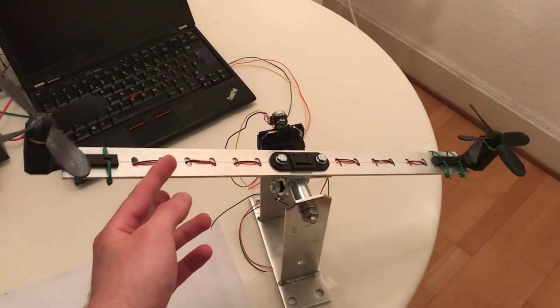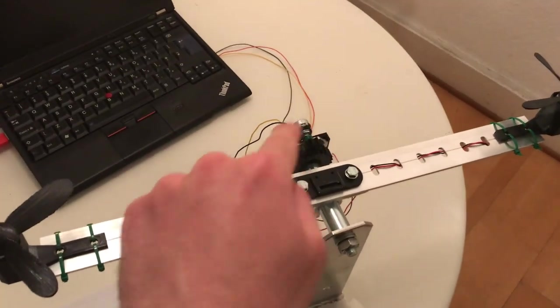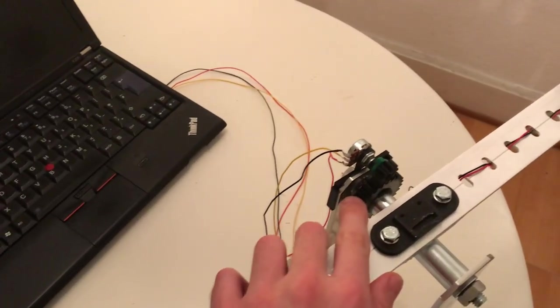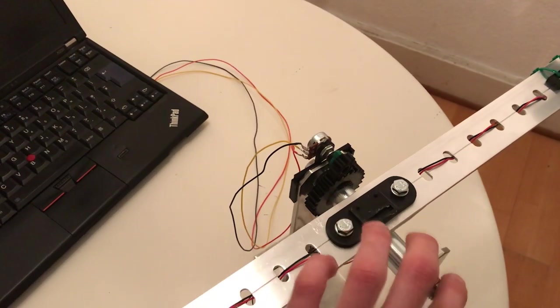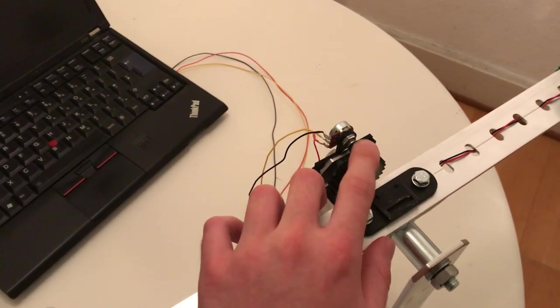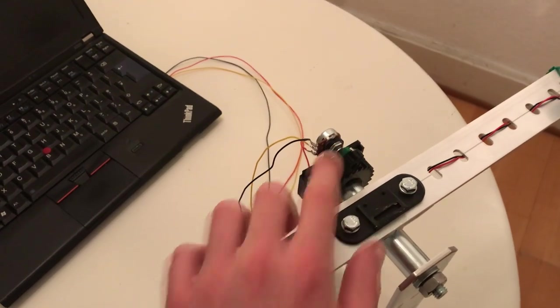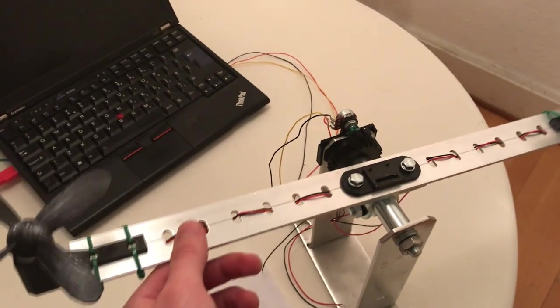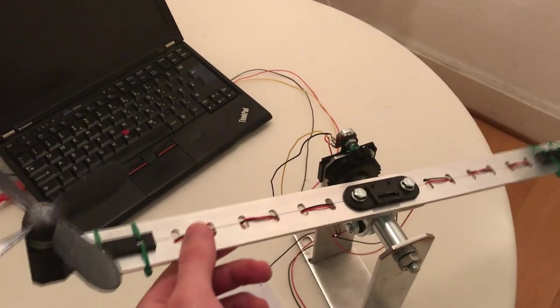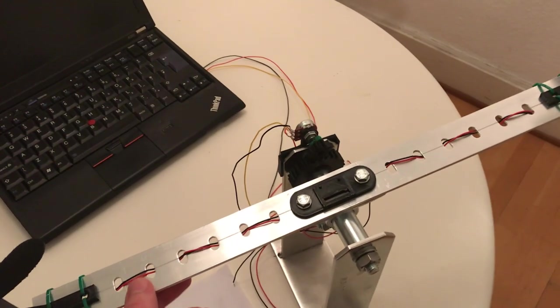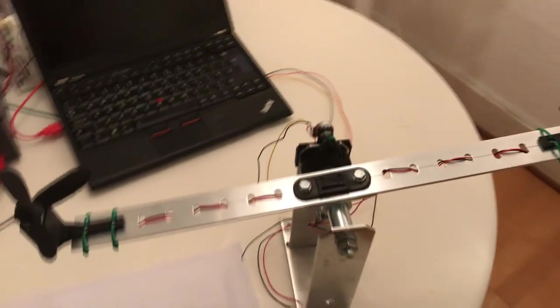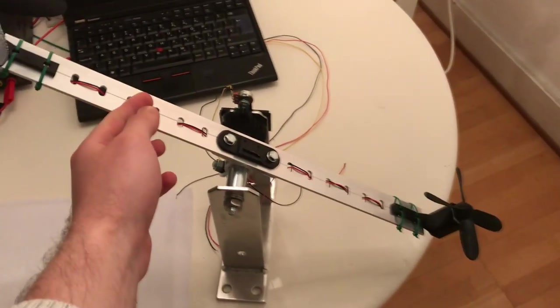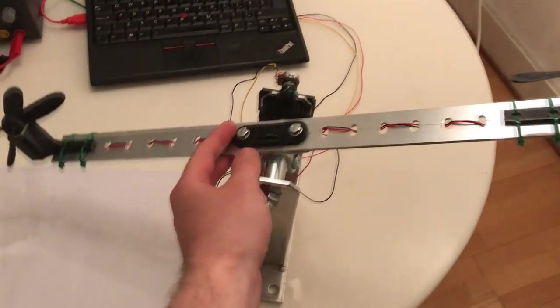The way we're sensing the angle is via this potentiometer in this little assembly over here. It's a bit hard to see in the light but these are actually two gears. One large gear attached to the pivot and then one smaller gear attached to the shaft of the potentiometer. So when the larger gear rotates, the smaller gear rotates and that in turn rotates the shaft of the potentiometer and we can just read off an applied voltage.